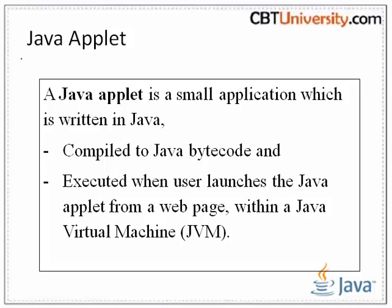Java applets are executed in a sandbox environment by most web browsers, preventing them from accessing local data like the clipboard or the file system. The code of the Java applet is downloaded from a web server, after which the browser either embeds the applet into a web page or opens a new window showing the applet's user interface.